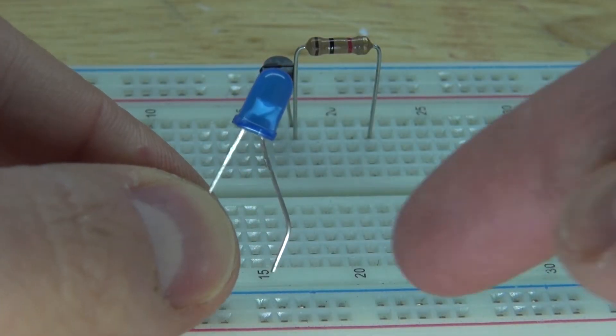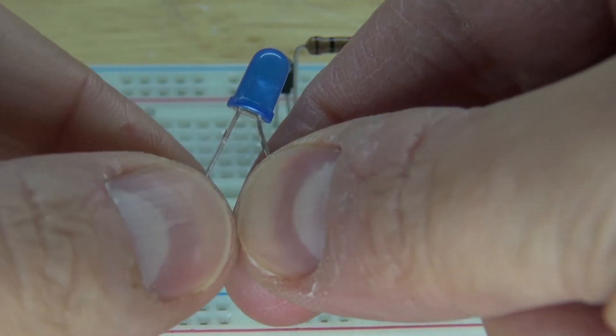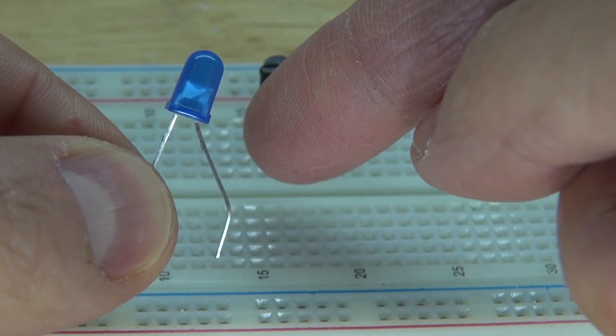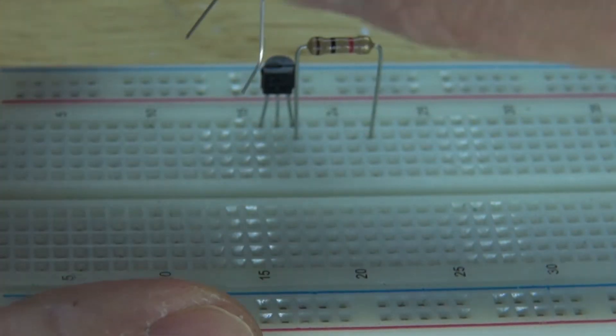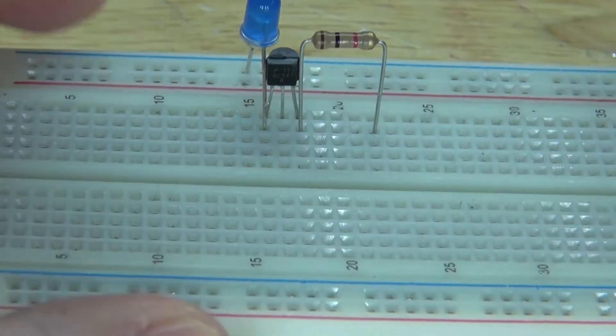Next I'm going to take this LED. This pin here is the anode, this pin here is the cathode. I want to connect the anode to the collector of the transistor and connect the cathode to the negative rail. There we go.